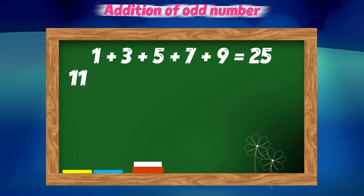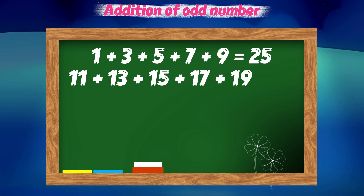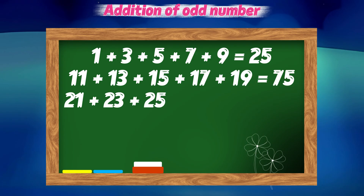11 plus 13 plus 15 plus 17 plus 19 equals 75. 21 plus 23 plus 25 plus 27 plus 29 equals 125.